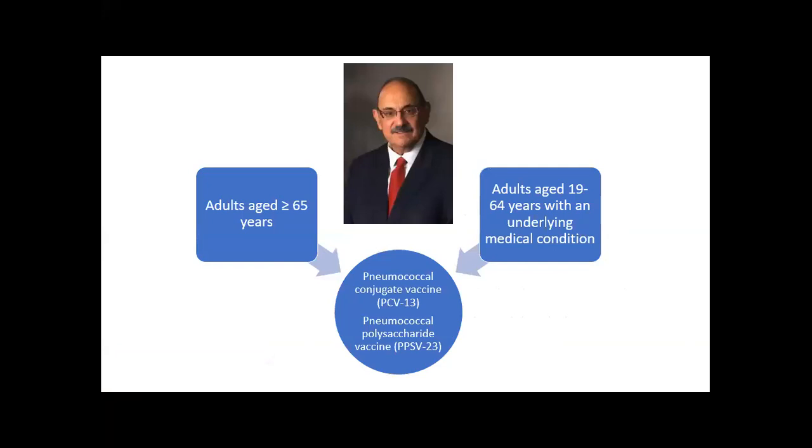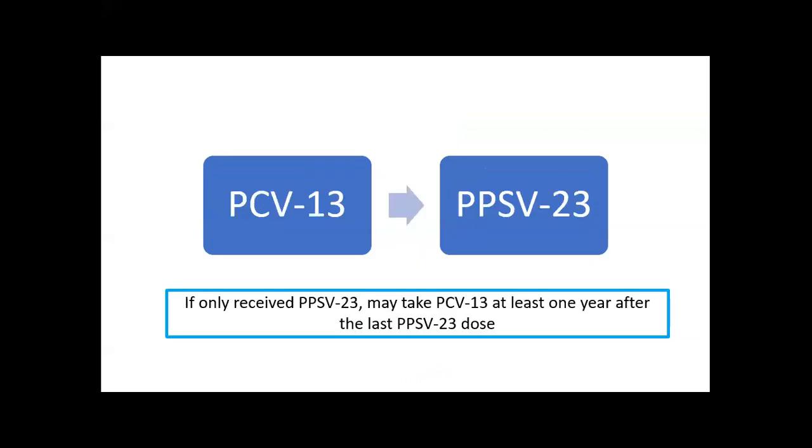In terms of pneumococcal vaccine, the recommendation is to use the 20-valent conjugate vaccine or the 15. Unfortunately, we don't have that available in South Africa yet, we have the PCV13. Who qualifies? Any adult over 65, any adult 19 to 64 with underlying medical conditions including chronic lung conditions. The two vaccines available are the PCV13 and the PPSV23. Ideally, the 13 should be given first and the 23 afterwards. Some patients may have gotten the 23 beforehand, but they can still take the 13 at least one year after their last PPSV23 dose.